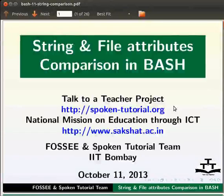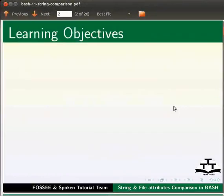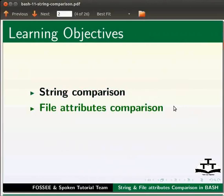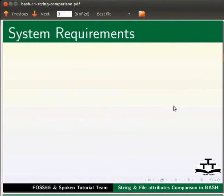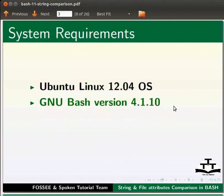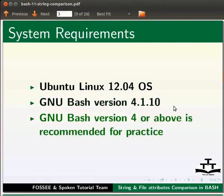Dear friends, welcome to the spoken tutorial on string and file attributes comparison in bash. In this tutorial, we will learn string comparison and file attributes comparison, using a few examples. I am using Ubuntu Linux 12.04 operating system and GNU Bash version 4.1.10. Please note GNU Bash version 4 or above is recommended to practice this tutorial.